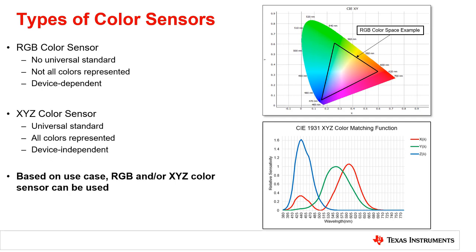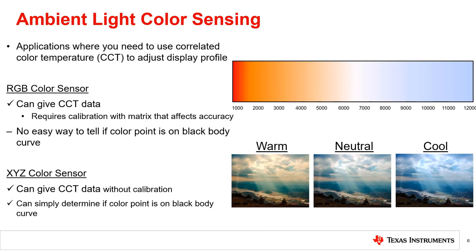Based on the use case, using an RGB color sensor or an XYZ color sensor will produce different results and considerations. Ambient light color sensing is one of the most common use cases for color sensors. Since in most cases the ambient light will be some form of white light, correlated color temperature, or CCT, is most likely the desired output. The CCT can be used to adjust the display's color profile to ensure that the display's images seem natural, or as it would be seen on a white piece of paper.